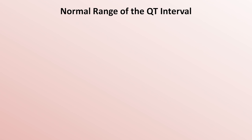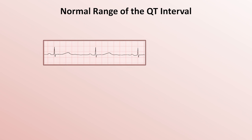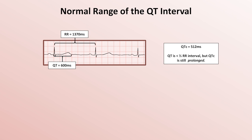Let's take a look at two examples. In this example, a patient is very bradycardic, with a heart rate of 44 and an RR interval of 1370 milliseconds. The QT interval is measured at 600 milliseconds. 600 milliseconds is much less than half of 1370, so one might initially say that the QT interval is normal. However, if you plug in the RR and QT intervals into Bazett's formula, you find that the QTc is actually 512 milliseconds. As we'll see in a minute, this is prolonged, even though it eyeballs roughly okay to most novices.